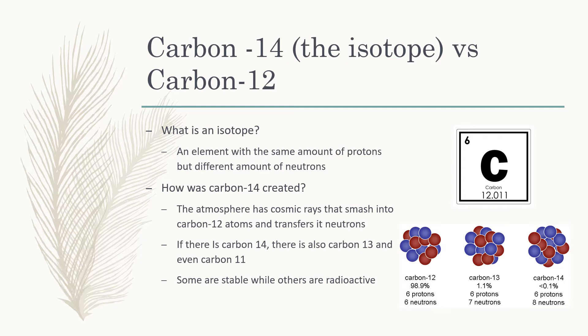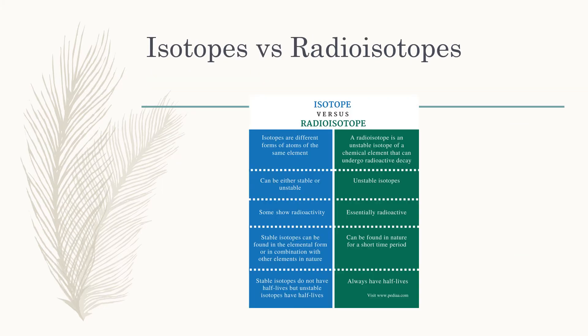Now, if there are other isotopes, why does carbon dating only use carbon-14? This is because of radioactivity. Carbon-14 is a radioactive isotope, also known as a radioisotope, meaning it is very unstable and will likely decay by alpha, beta, or gamma radiation to reach a more stable state. This is why radioisotopes have half-lives, while stable isotopes, because they are more likely to not decay, will not have a half-life.